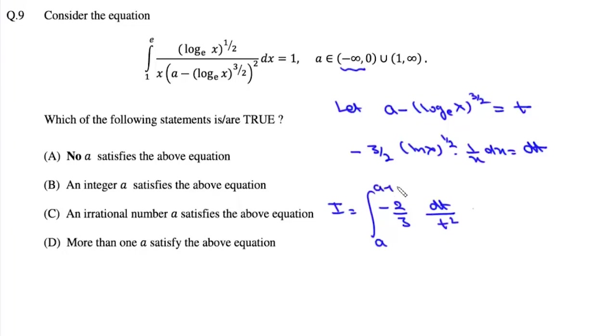And this is equal to one. So it will be this minus two by three and integration of one upon t square is minus one upon t.